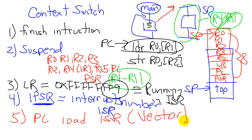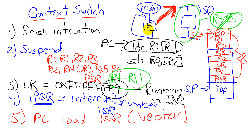So with this five-step process, we suspended the current program which is the main — we call this the main thread — and we are able to transfer control to the interrupt service routine thread. So we have two threads: the main thread and the interrupt service routine thread, and control now is with the interrupt service routine thread.